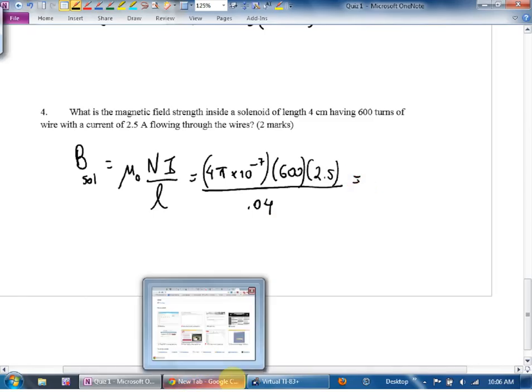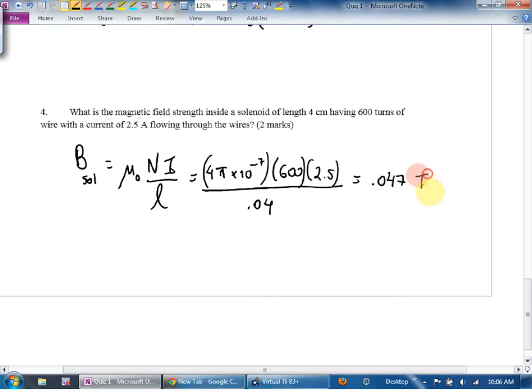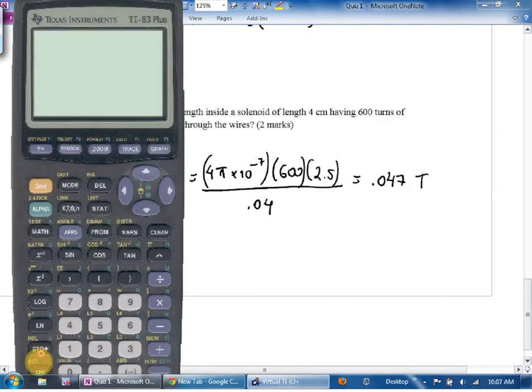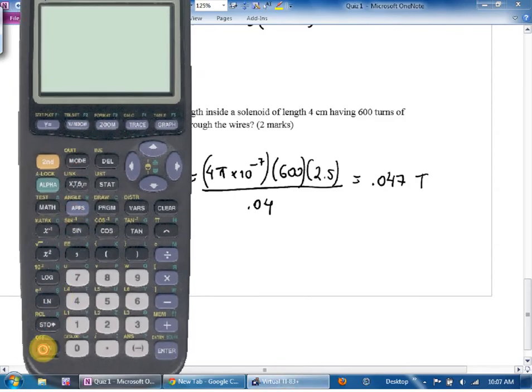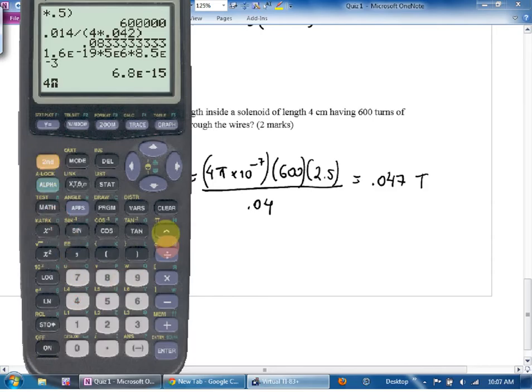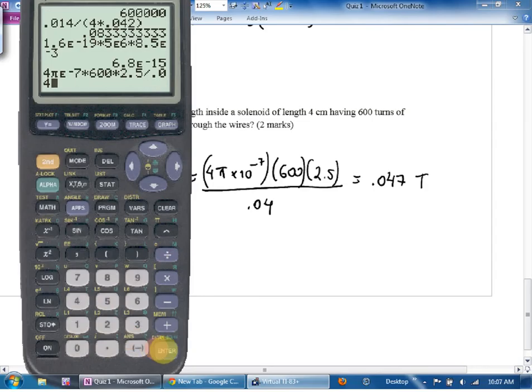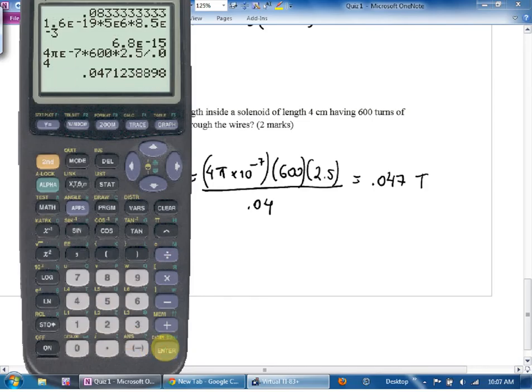What'd you get? 0.047 teslas, is that correct? Yes. Two marks, I'd probably go one mark for that, half mark for the numbers, half mark for the answer. Let's double check this one: 4π times 10 to the negative 7 times 600 times 2.5 divided by 0.04. Yeah, 0.047 teslas.